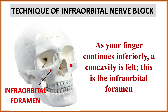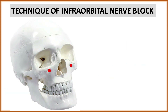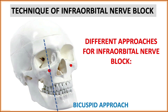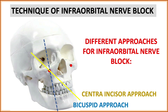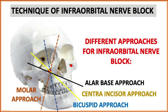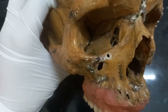There are four different approaches to give an infraorbital nerve block. The first is the bicuspid approach — direct the needle parallel to the long axis of the first premolar to reach the target. The second is the central incisor approach — by bisecting the central incisor, you directly reach the infraorbital foramen. The third is the alar base approach, and the fourth is the molar approach. The most commonly used are the bicuspid and the central incisor approach.